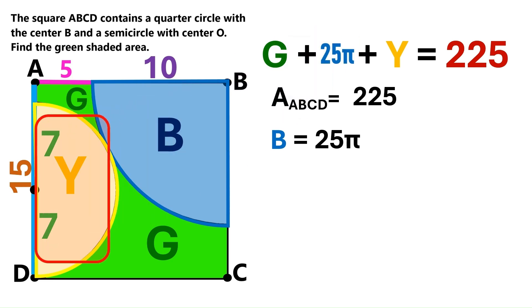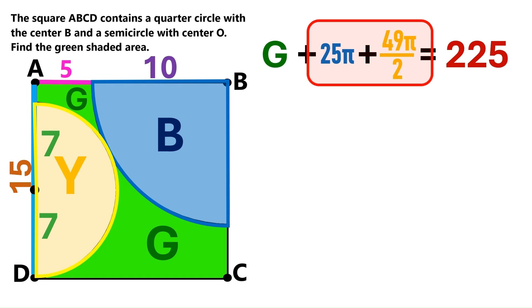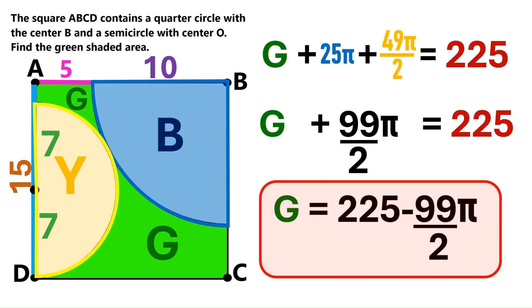And finally, let's find this yellow region Y, which is a semicircle with a radius of 7. Again, we take the square of the radius, multiply it by π, and then divide it by 2, because it's a half circle. We do the math, and we get 49π over 2. Let's put that value into our equation. We are very close to finding the green area. Let's add these two together. It's 99π over 2. We take that to the other side, and the green area we want to find turns out to be 225 minus 99π over 2.